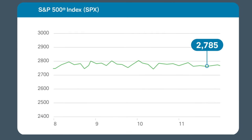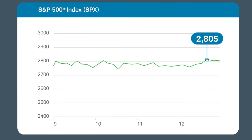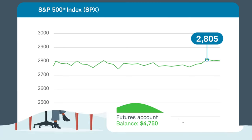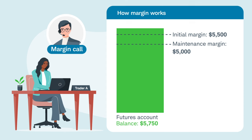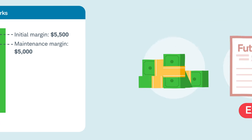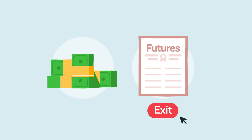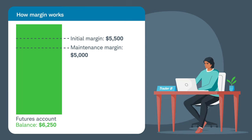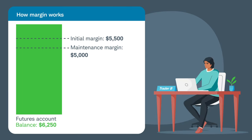The next day, the S&P 500 rallied 20 points. Trader A's account increased by $1,000 and is now at $5,750. Her account balance is back above the initial margin requirement, which means she satisfied her margin call. Remember, if her position didn't appreciate in value, she'd have been required to add funds or close her position. Trader B's account balance went from $6,250 to $5,250.